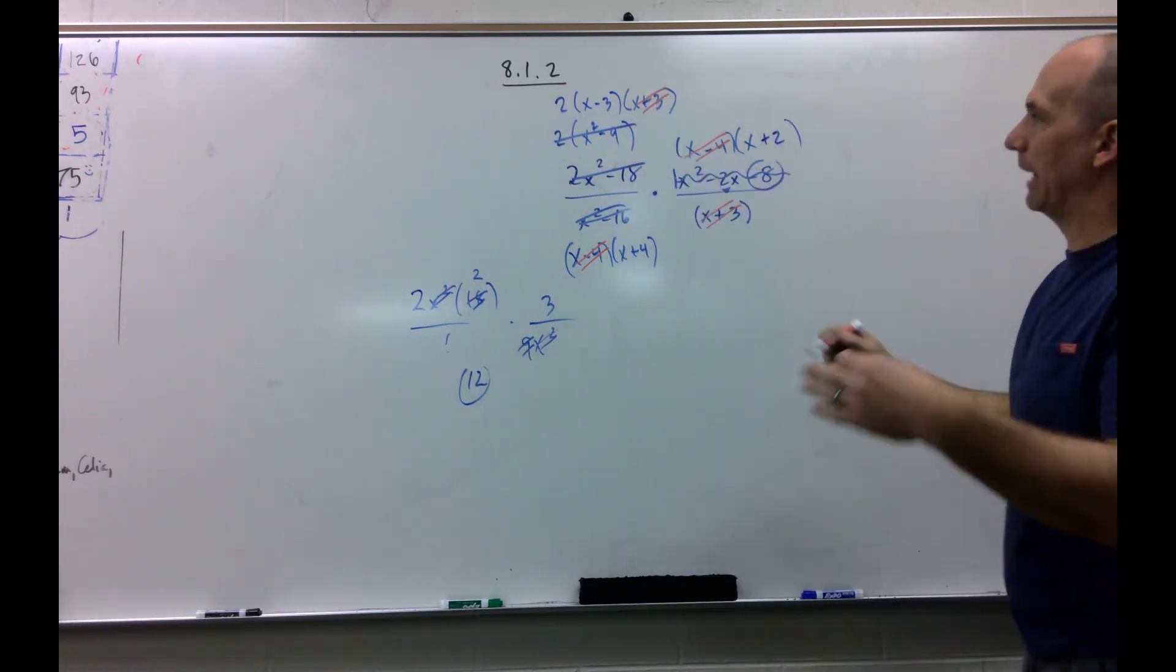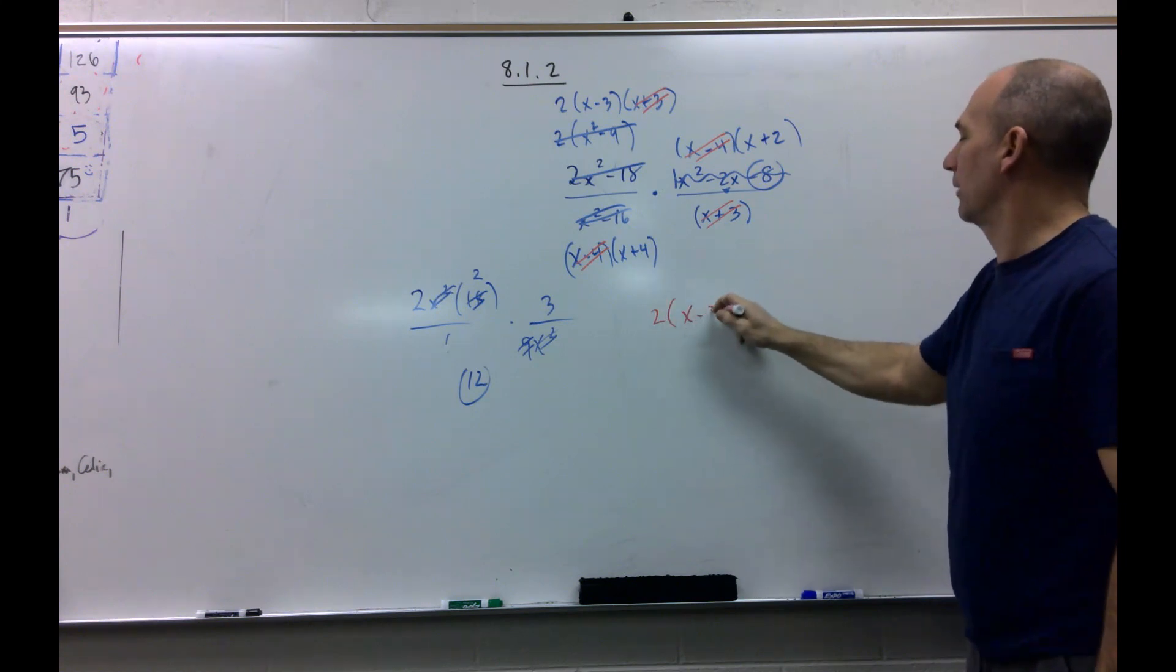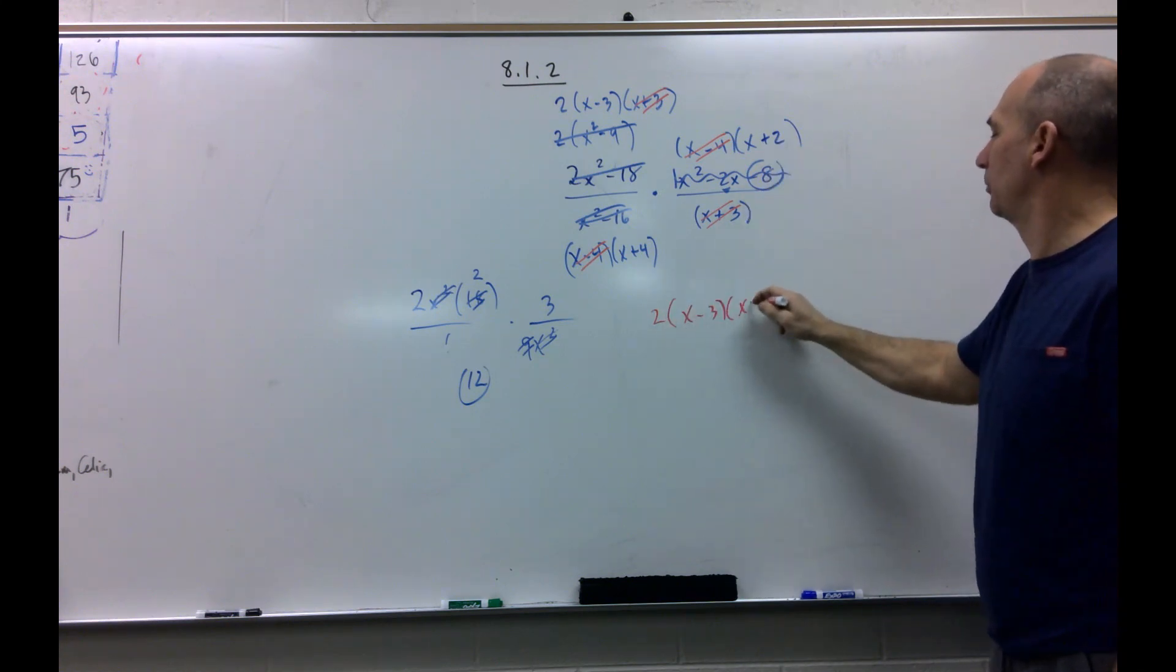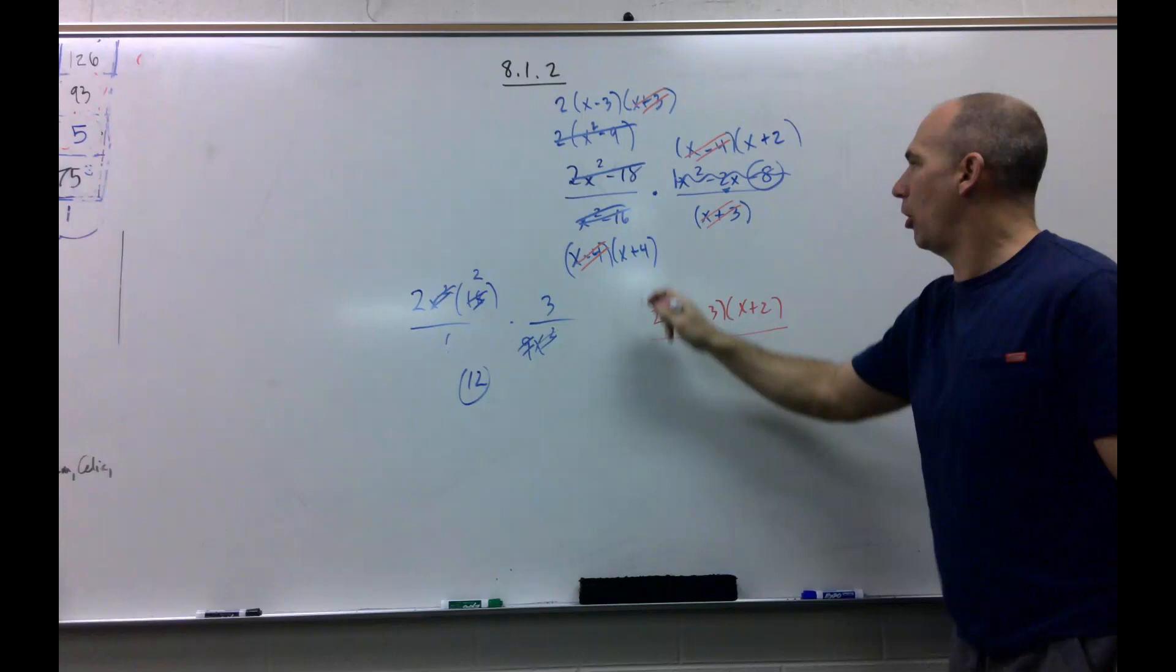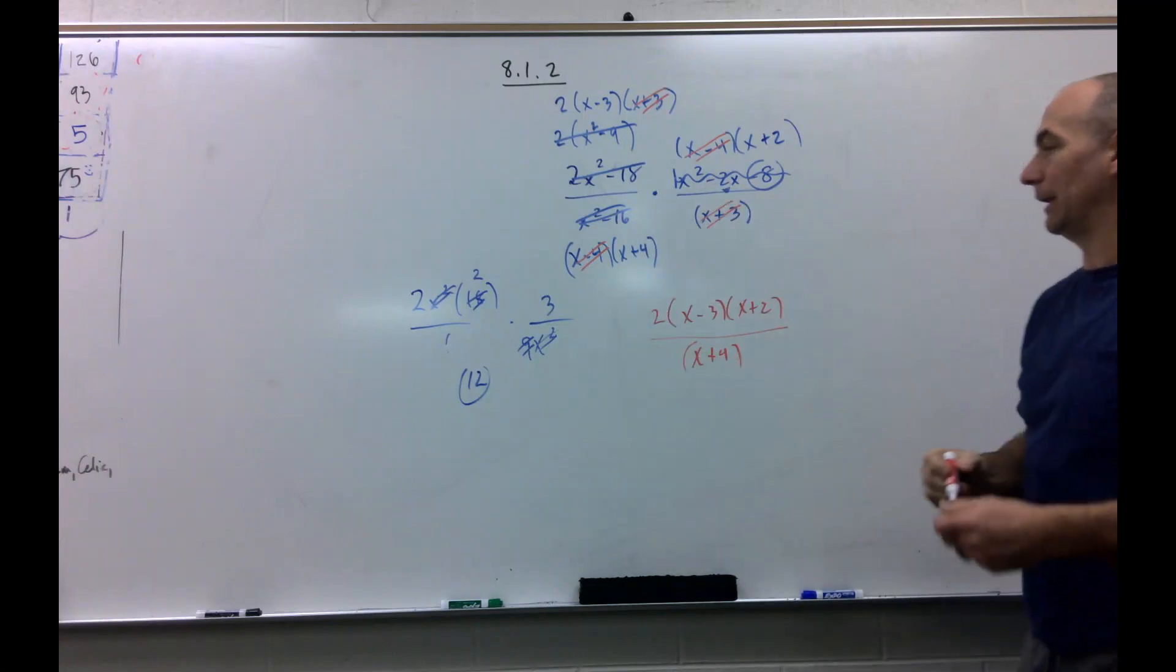So what do I have on the top? 2 times x minus 3 times x plus 2, all over, and the only thing in the denominator is x plus 4. And that's it.